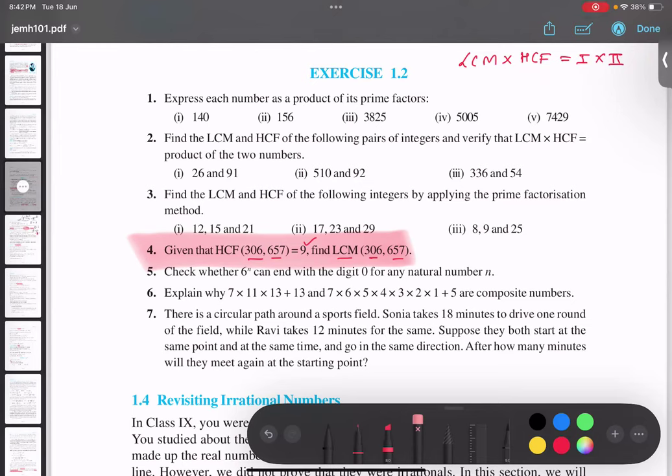So what is the first number over here? First number is 306. And what is the second number? 657. What is the HCF? 9. LCM we have to find.